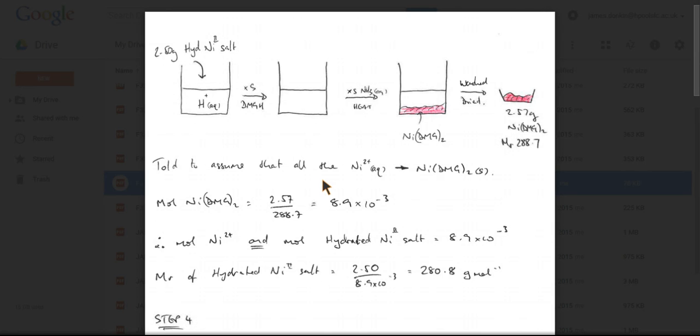We know that the mass of hydrated nickel 2 salt was two and a half grams. So we could work out the MR of that. And again, that's mass over moles. That's going to give us the MR. And we get 280.8 grams per mole. So straight away we've scored two marks just from the information they've given us in the question.